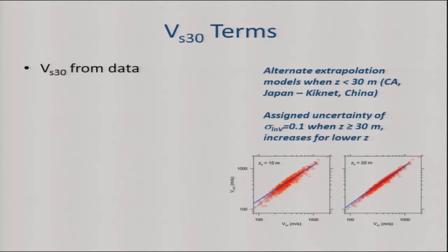We have assigned uncertainties to all of our velocities. For measured velocities, after a lot of discussion and looking at dense sets of velocities measured at a given site, we've arrived at a log sigma of 0.1 when we have a measurement that goes to 30 meters. When the measurement is shallower than 30 meters, you'll get a higher standard deviation — the standard deviation climbs the shallower the measurement is.